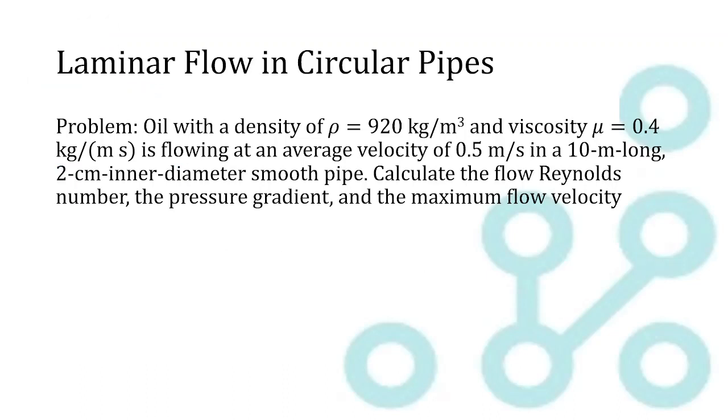So here's our problem statement. We have oil with a density of 920 kilograms per cubic meter and a viscosity of 0.4 kilograms per meter second, which is flowing at an average velocity of 0.5 meters per second in a 10 meter long, 2 centimeter inner diameter smooth pipe.